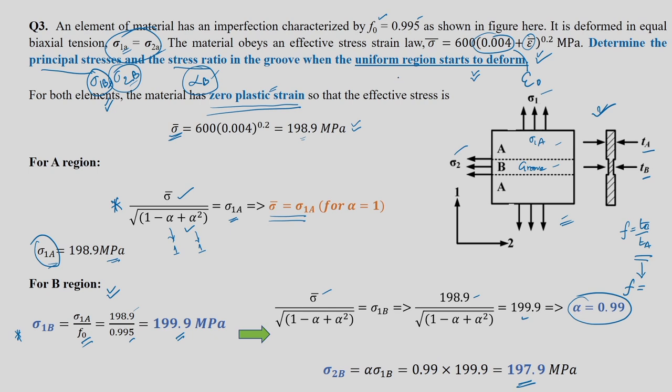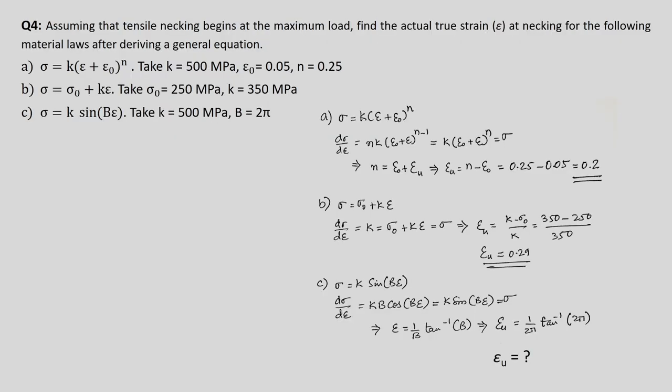If the uniform region starts to deform with some given effective strain, that value must be used instead of zero. Here, since no value is given, we assume zero plastic strain. This completes the third problem.